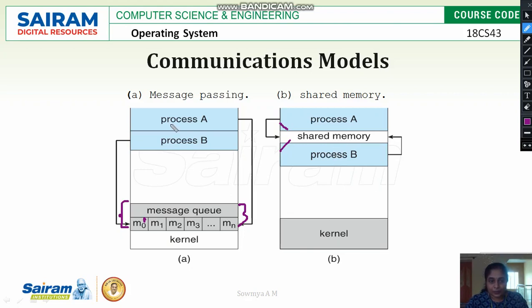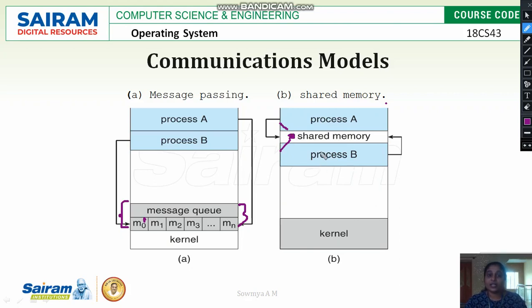So if process A needs to send data to process B, it sends it to the message queue and process B can get it from there. In shared memory, if process A has data stored in shared memory, that data can be accessed by both processes, allowing them to communicate with each other.